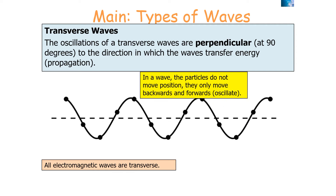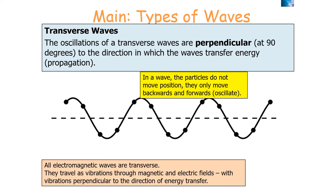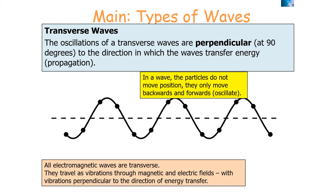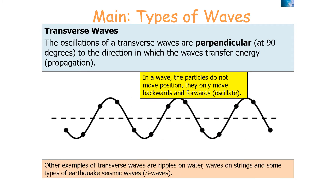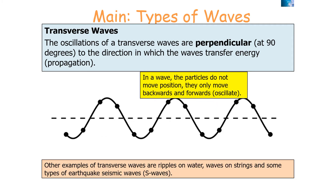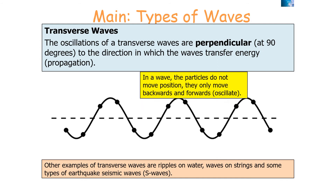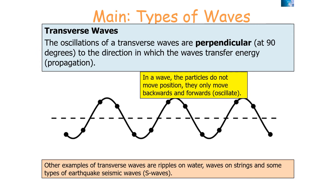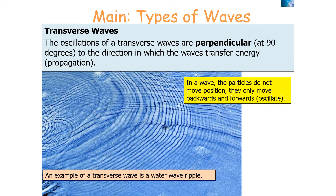All electromagnetic waves are transverse — they travel as vibrations through magnetic and electrical fields, with vibrations perpendicular to the direction of energy transfer. Other examples of transverse waves include ripples on water, waves on strings, and some types of seismic waves — S-waves. For example, in a water wave ripple, the particles do not move position; they only oscillate, moving backwards and forwards.